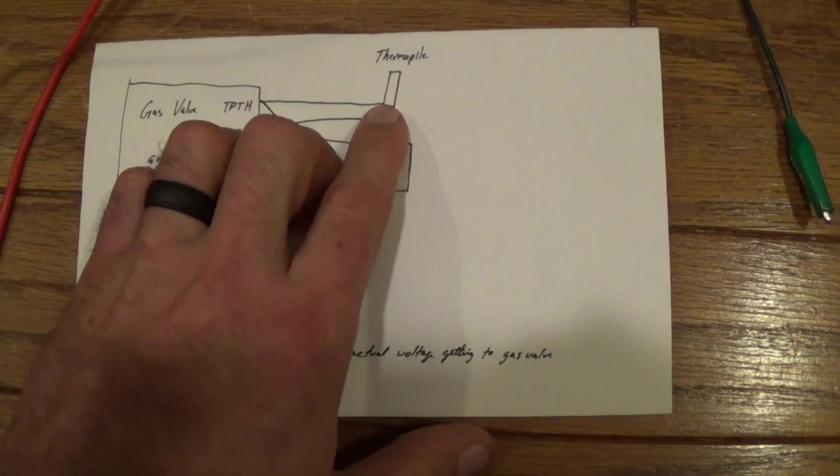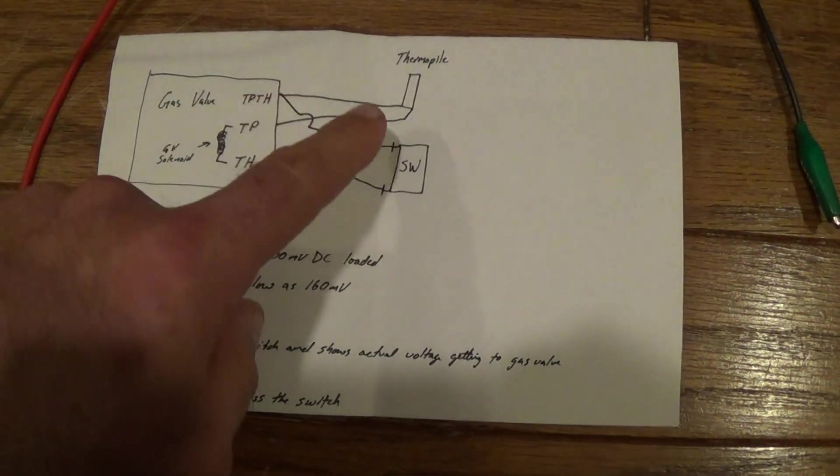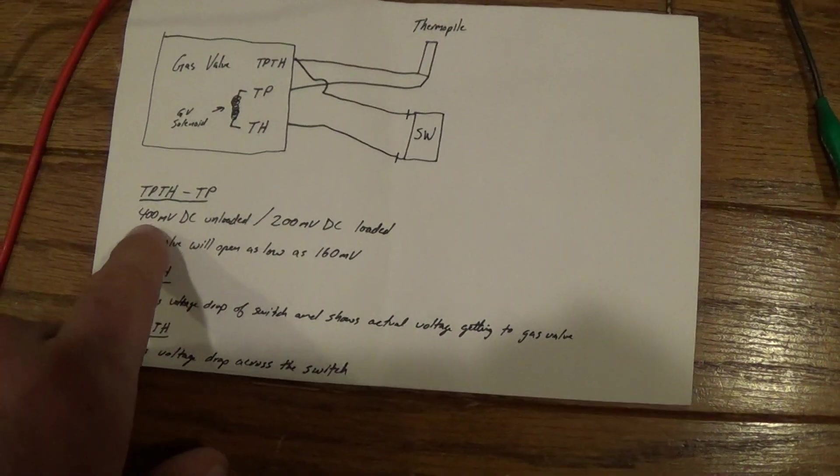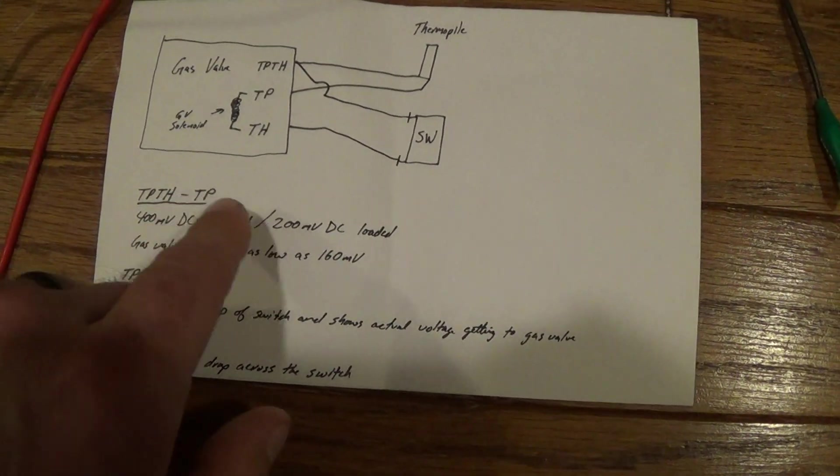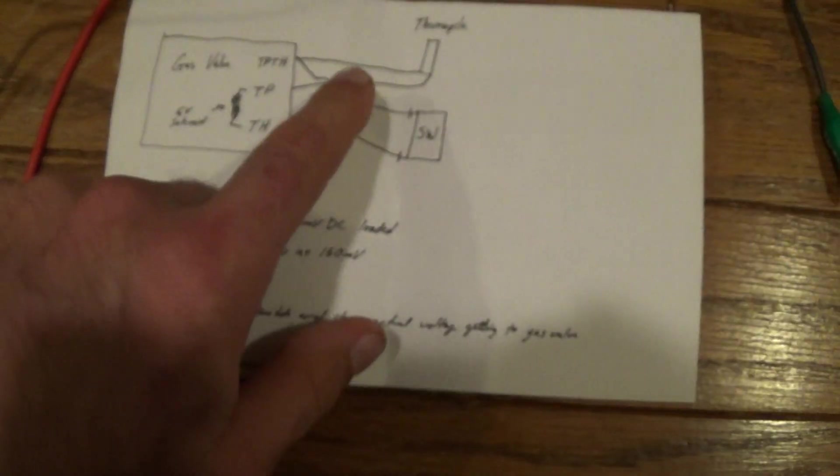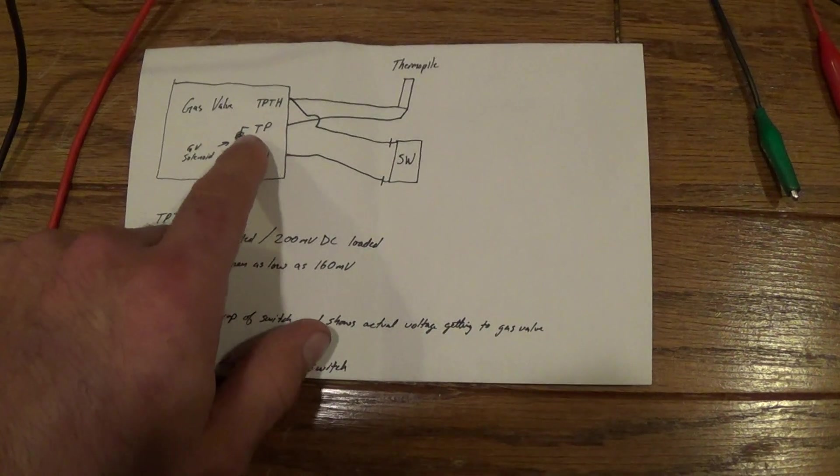When the thermopile is in the flame and the gas valve is not on, so the thermopile is unloaded, you're gonna see about 400 millivolts DC or higher.